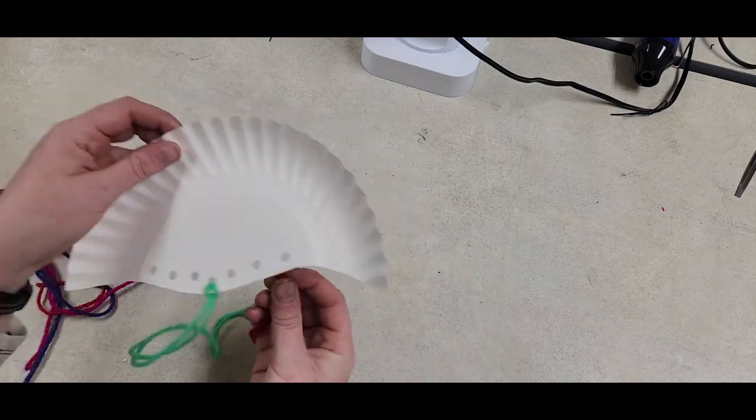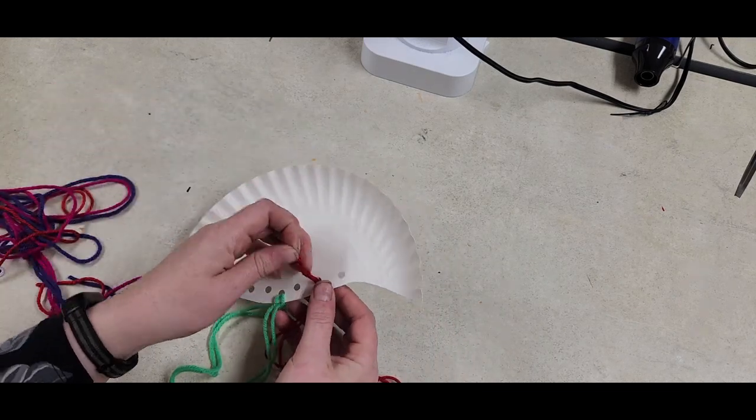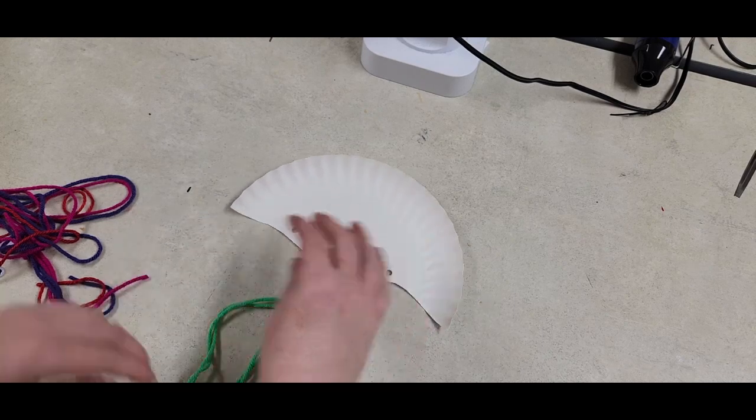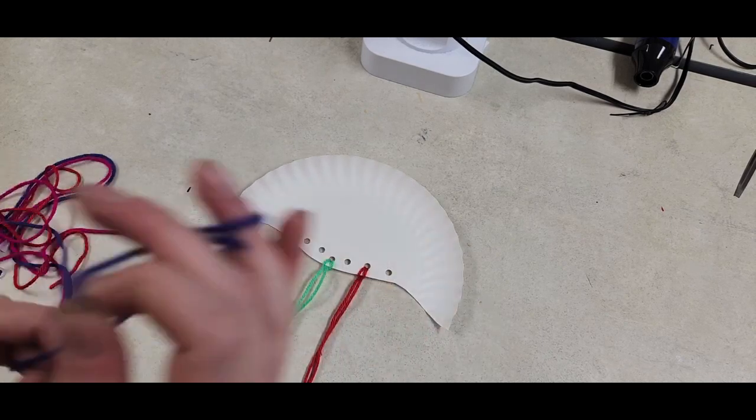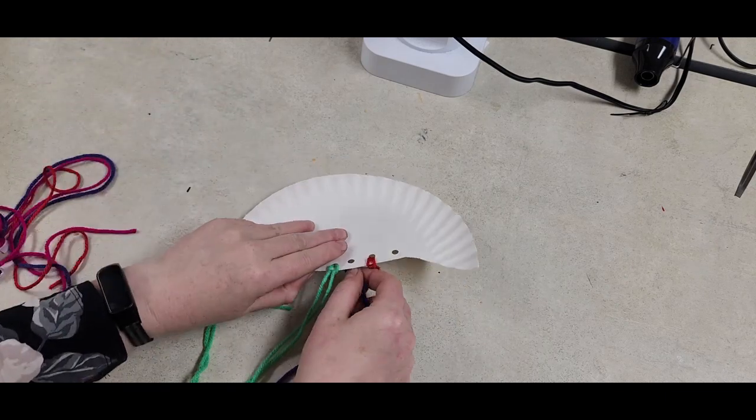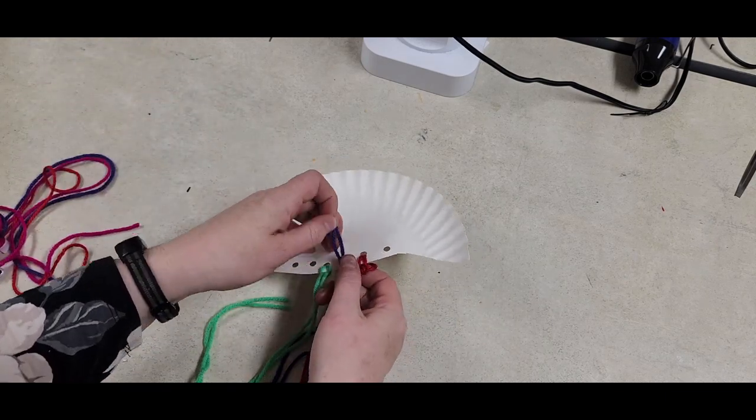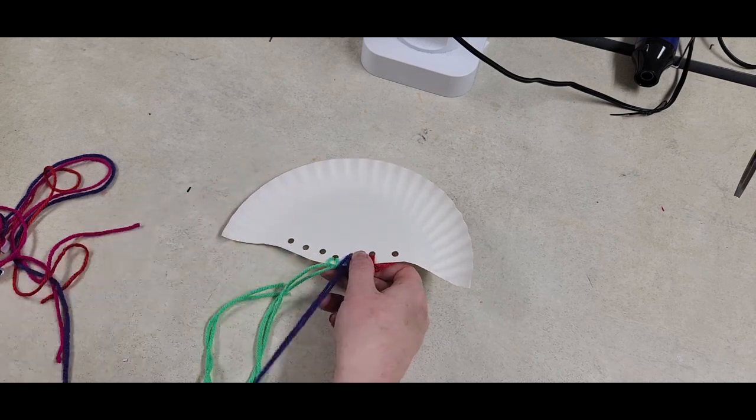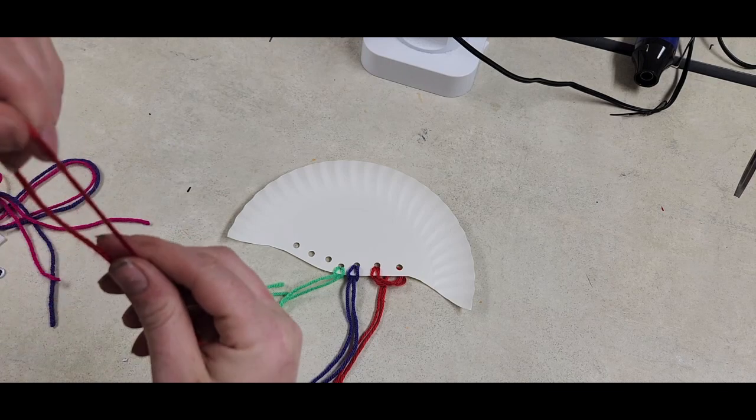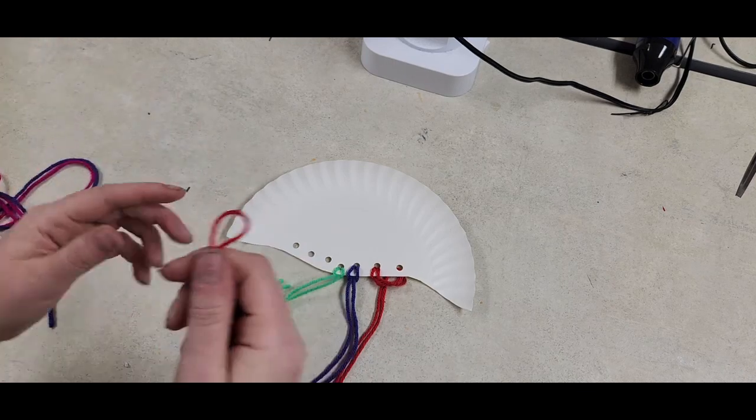I'm going to loop all of mine through in a random order. I have a pretty colorful jellyfish, so I'm not too concerned about what order my pieces go in. I just don't want two of the same color right next to each other. That's really my only worry.